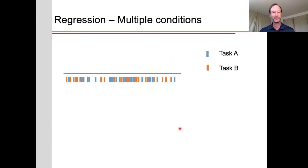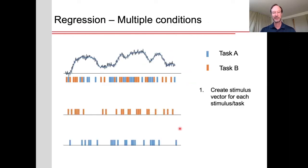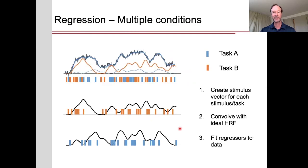So now let's consider an event-related design with three conditions, task A, task B, and control, shown in this timing here. Again, with this, this is what the BOLD response would look like. Again, we would take the stimulus timing or stimulus vector for each task, convolve that with the hemodynamic response function, and then we fit the sum of these to the data.